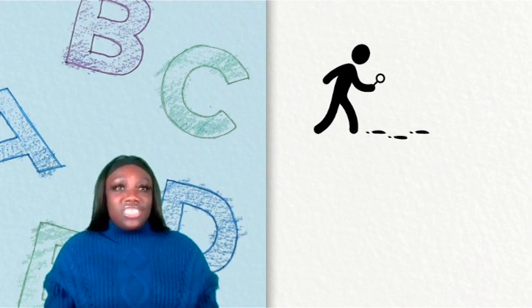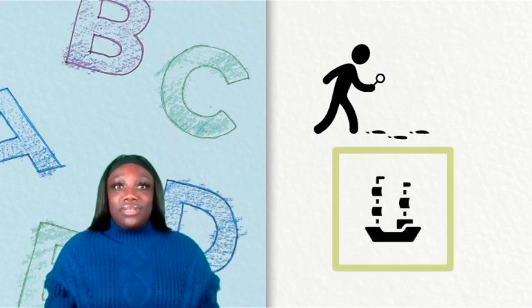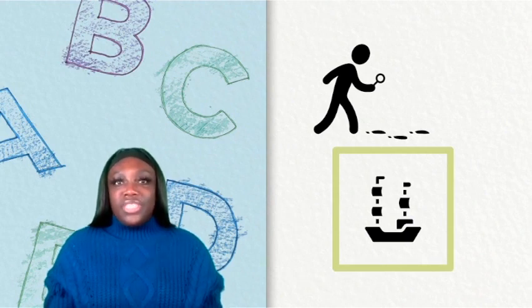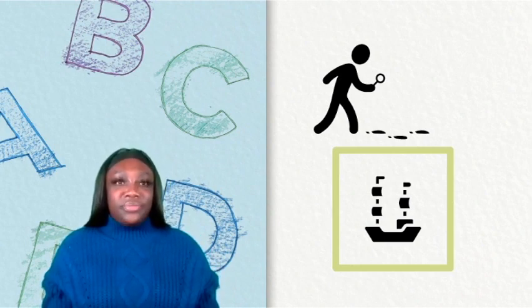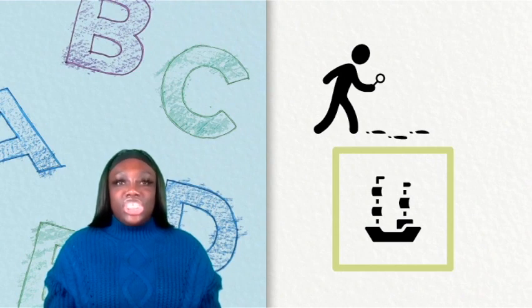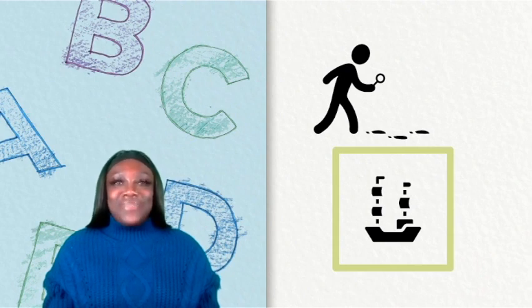First, I'll say a word like ship and then you repeat the word. Ready? Let's try it. Ship. Now you say the word with me. Ship. Listen carefully and inspect the sounds as I say the word again and break it apart. Sh-i-p. Now it's your turn. Sh-i-p. Nice segmenting.